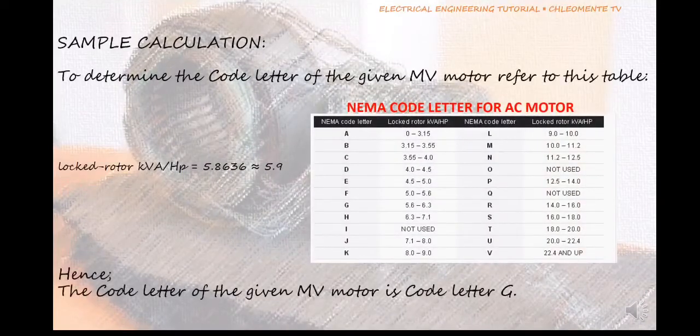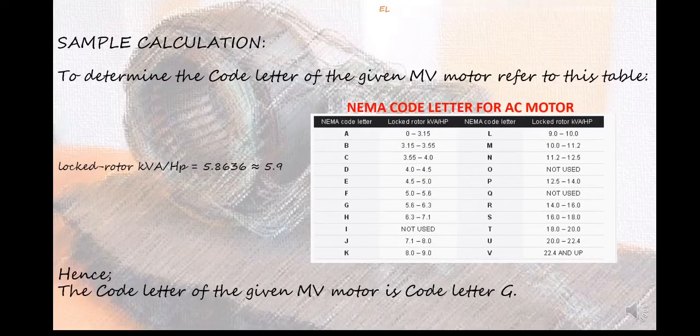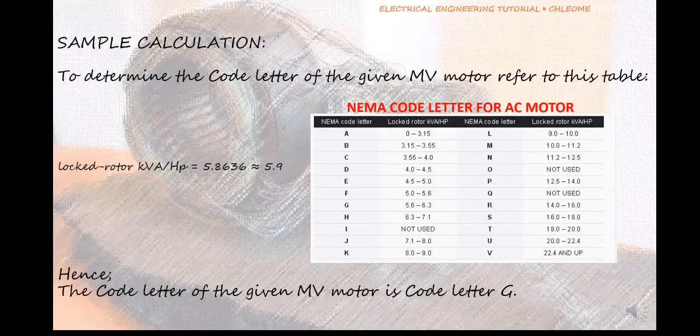Now that the locked rotor kVA per HP is calculated, we will use this value to look into the table given by NEMA or National Electrical Manufacturers Association, a standard for electric motors. In the table, you will notice that the locked rotor kVA per HP has minimum and maximum values with corresponding code letters. These values determine the minimum and maximum values of inrush current by multiplying these values to the full load current of the motor.